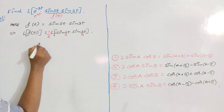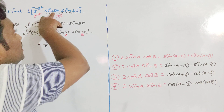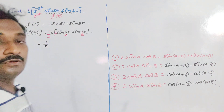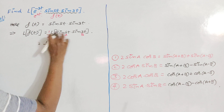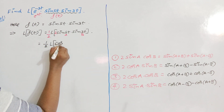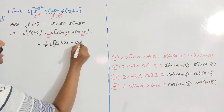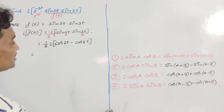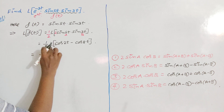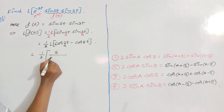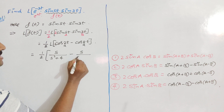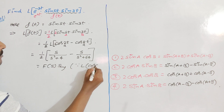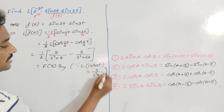Applying the last formula: sin5t · sin3t = (1/2)[cos(5t−3t) − cos(5t+3t)] = (1/2)[cos2t − cos8t]. So L{sin5t · sin3t} = (1/2)[L{cos2t} − L{cos8t}] = (1/2)[s/(s²+4) − s/(s²+64)]. This is F(s), since both terms are in the form L{cos(at)} = s/(s²+a²).